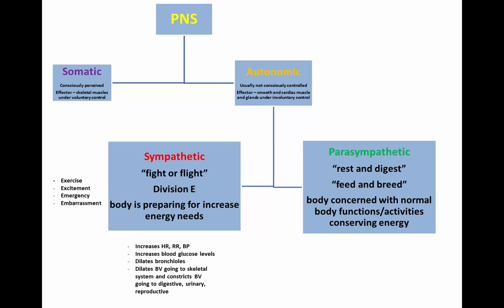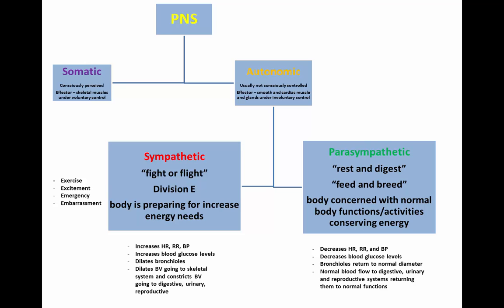In the parasympathetic division, the body restores and conserves energy by returning heart rate, respiratory rate, and blood pressure to normal levels. Glucose levels drop and are stored in the liver and muscle cells. Bronchioles return to normal diameter and normal blood flow to the digestive, urinary, and reproductive systems, thus returning them to normal bodily functions.